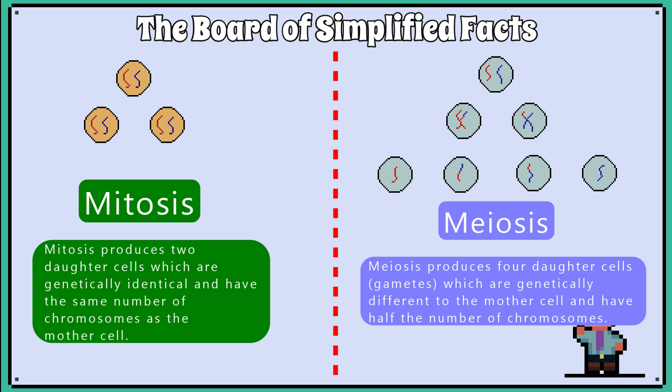Let's quickly compare mitosis to meiosis first. Mitosis produces two daughter cells, which are genetically identical, and have the same number of chromosomes as the mother cell. Meiosis produces four daughter cells, which are genetically different to the mother cell, and have half the number of chromosomes. The terms daughter and mother cells shouldn't be confused with only being in females — they are just the terms for the starting cell and the new cells formed after each respective process.